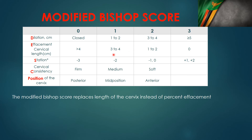A cervical length of three to four centimeters scores one, and greater than four centimeters scores zero. For station, you count down starting from minus three, minus two, minus one, and the last category of plus one and plus two — which adds to three — scores three.